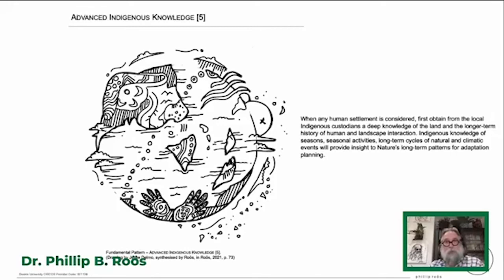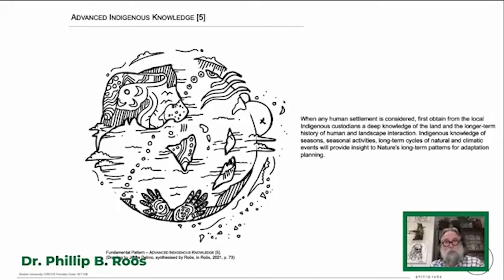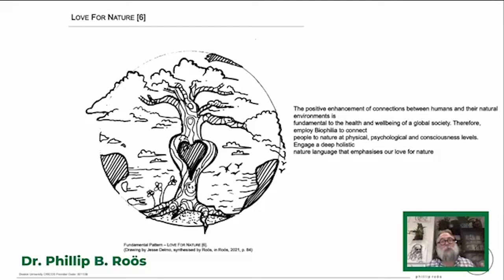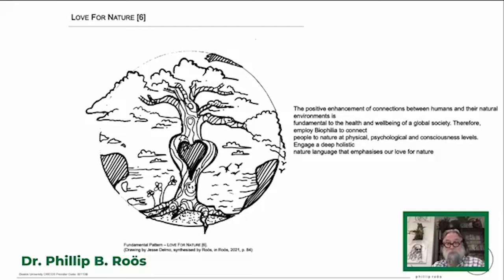Because this connection to country and land is so important, the next pattern is our love for nature. Pattern number six informs us that the positive enhancement of connections between humans and their natural environment is fundamental to the health and well-being of a global society. Therefore, we need to employ biophilia to connect people to nature at physical, psychological, and consciousness levels. We need to engage in a deep, holistic nature language that emphasizes our love for nature — a complex system that we need to look at, and respect nature rather than just using its resources.